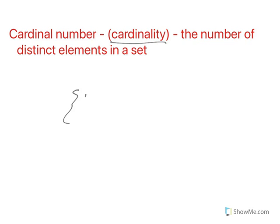So if we would have the set of one and two, the cardinality or the cardinal number for this would be two because you can see there are two distinct elements in this set.